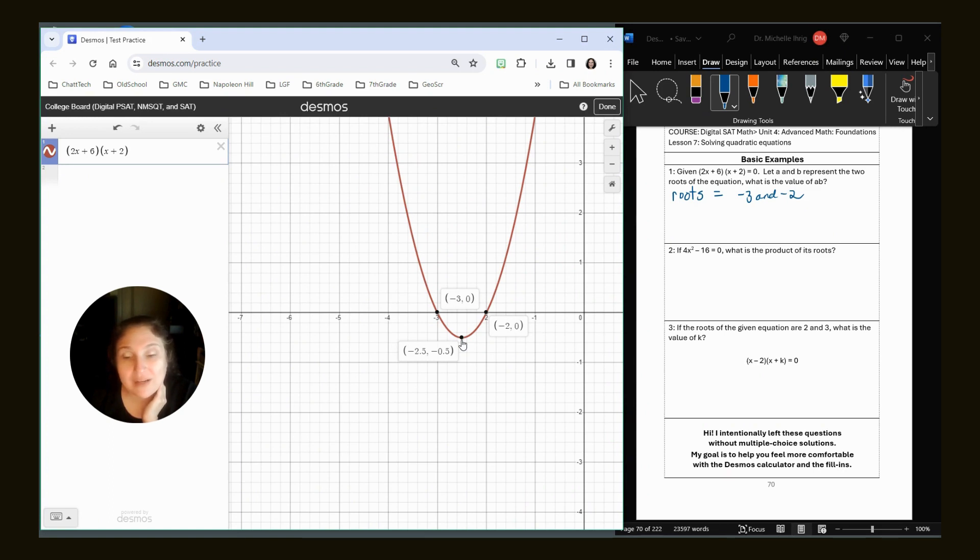Remember when it comes to quadratics and exponentials, the domain is almost always all real numbers, but the range depends on asymptotes and minimums and maximums. So in this case, our range would be y values greater than negative five.